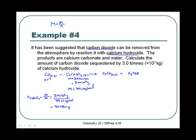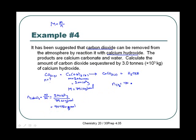From that we find the number of moles of CO₂ using the mole ratio. Because the mole ratio is one to one, the number of moles of CO₂ equals the moles of calcium hydroxide. With two significant digits, that's 4.0 × 10⁴ moles of CO₂ sequestered. For homework, complete questions 8 to 15 on page 278.